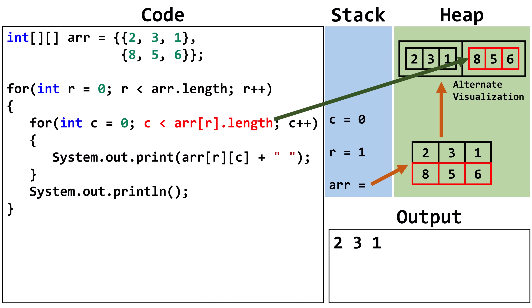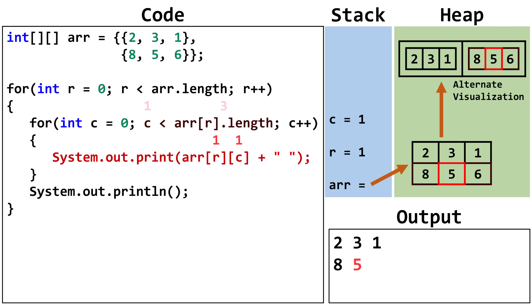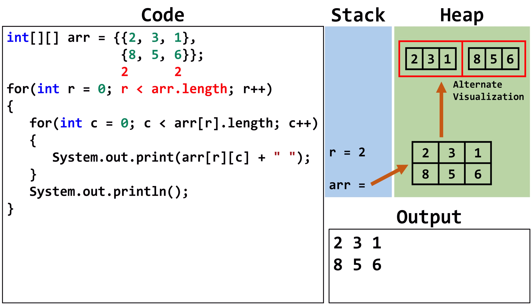Set c to 0. Now that r is 1, we are checking the length of row 1. c is less than 3, so we continue. We output arr row 1, column 0, which contains 8. Increment c to 1. c is less than 3, so we continue. We output arr row 1, column 1, which contains 5. Increment c to 2. c is less than 3, so we continue. We output arr row 1, column 2, which contains 6. Increment c to 3. c is not less than 3, so we terminate the inner loop. We output a new line. Increment r to 2. r is not less than 2, so we terminate the outer loop. And the program finishes.